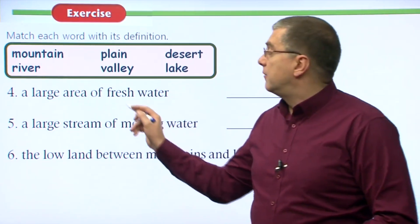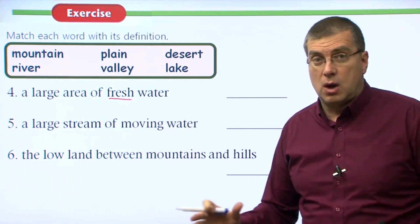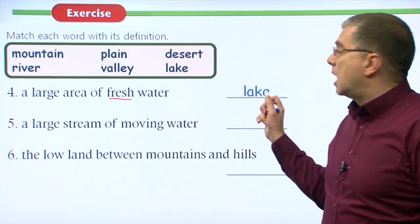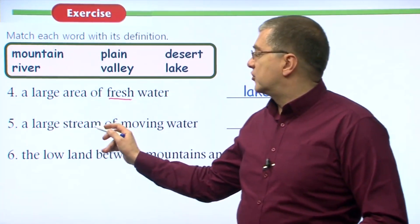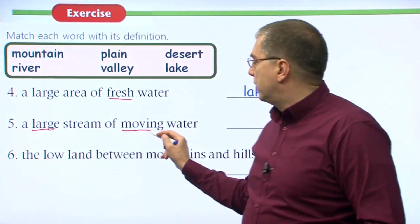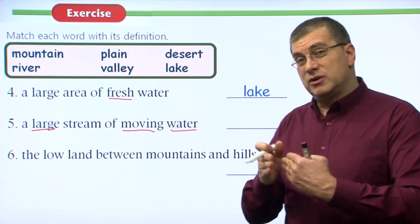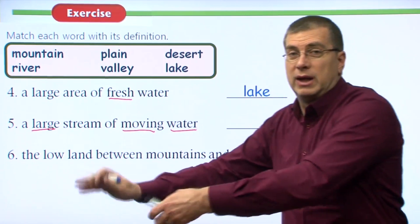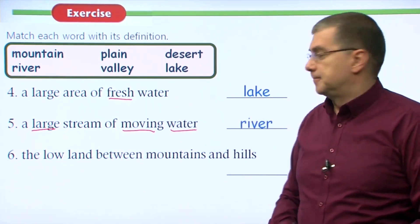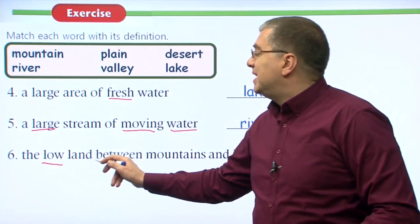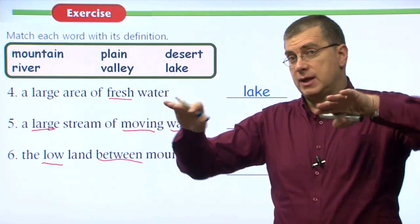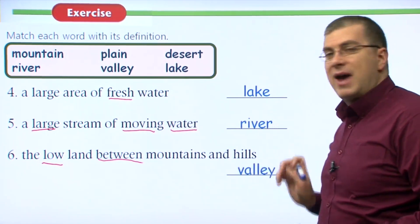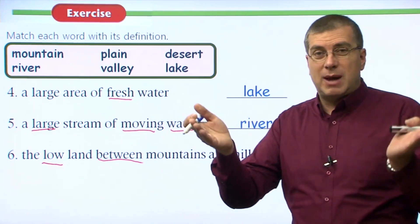Number four: a large area of fresh water. The water is probably not moving. It's fresh water, not salt water — so we call that a lake. Number five: a large stream of moving water. It's large — not a small stream — and the water is moving, not staying still like a lake. We call that a river. Number six: the low land between mountains and hills. Usually a river runs through it. We call that a valley.